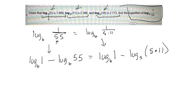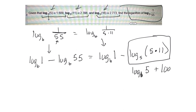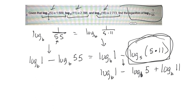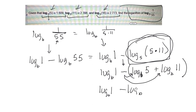Notice I put that in brackets — and this is a multiplication, so that means the product rule applies to this part. So I can expand that: log base b of 5 plus log base b of 11. But then this minus sign gives me problems, because that negative has to apply to everything in the bracket. So I should put a minus and brackets there. This minus has to apply to both terms, giving me: log base b of 1, minus log base b of 5, minus log base b of 11.